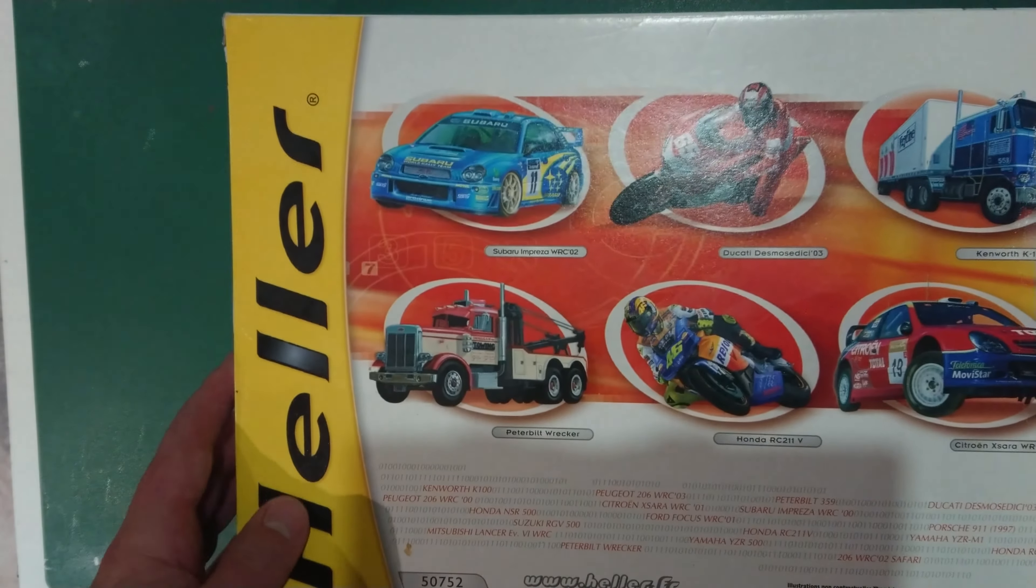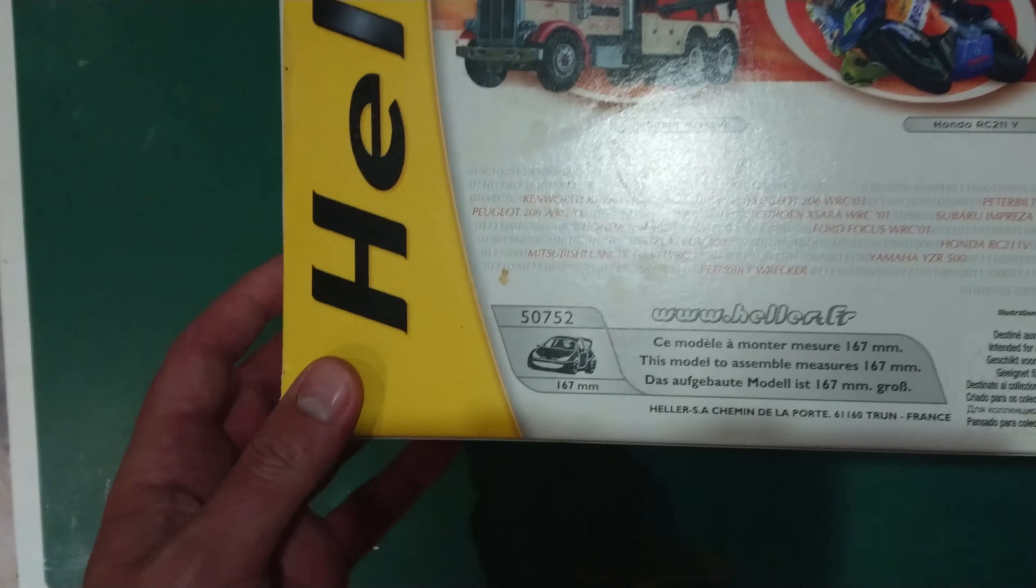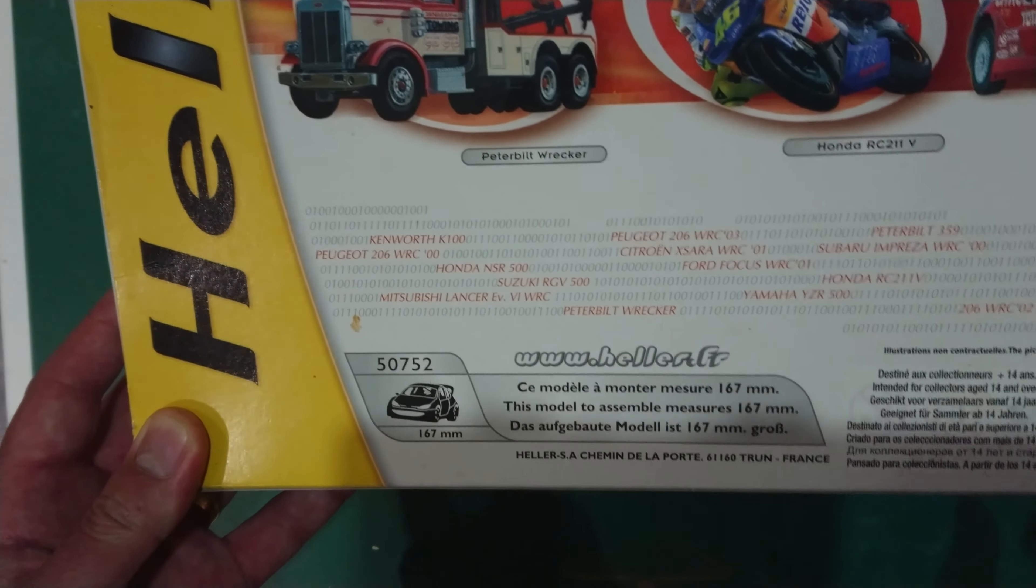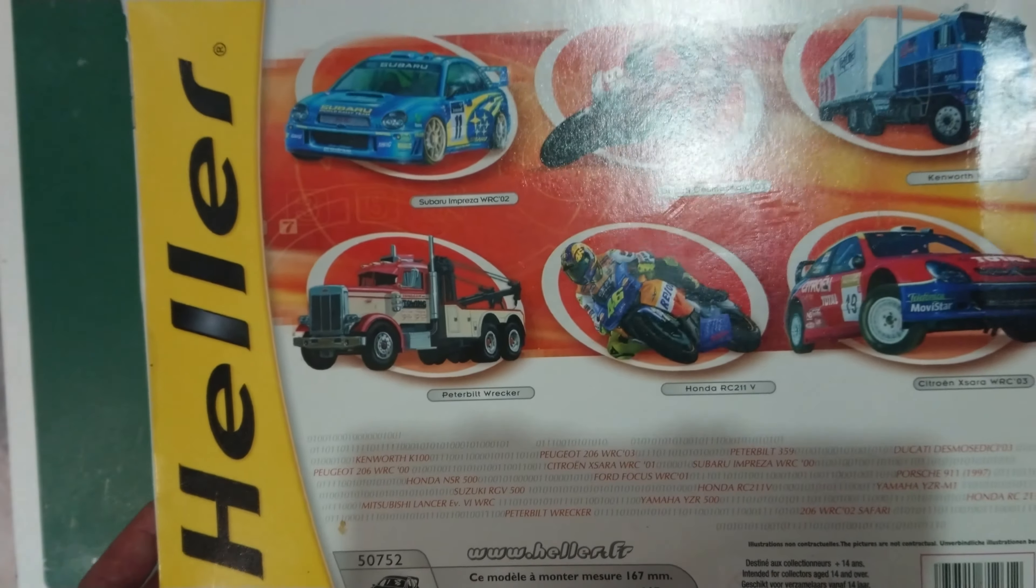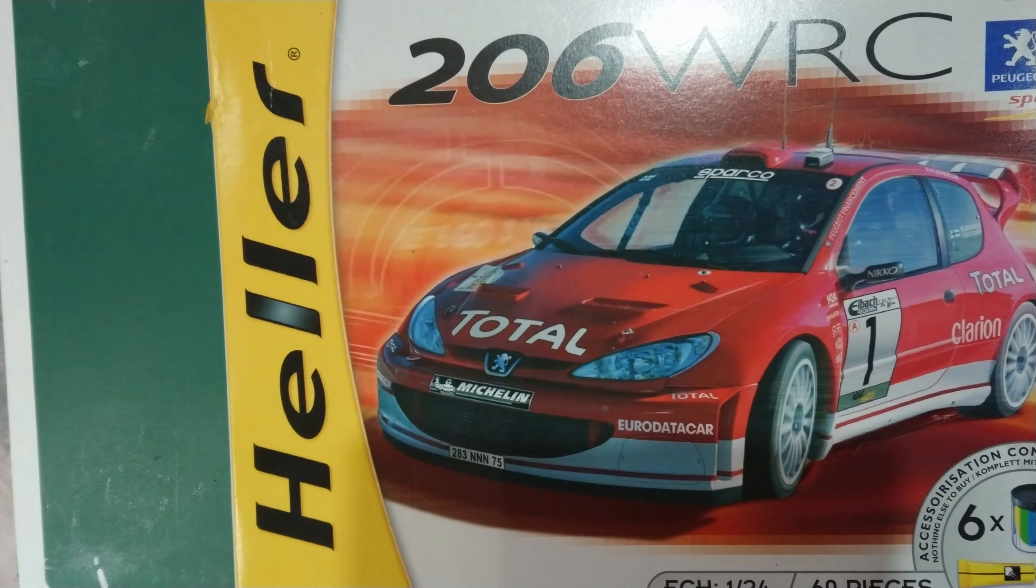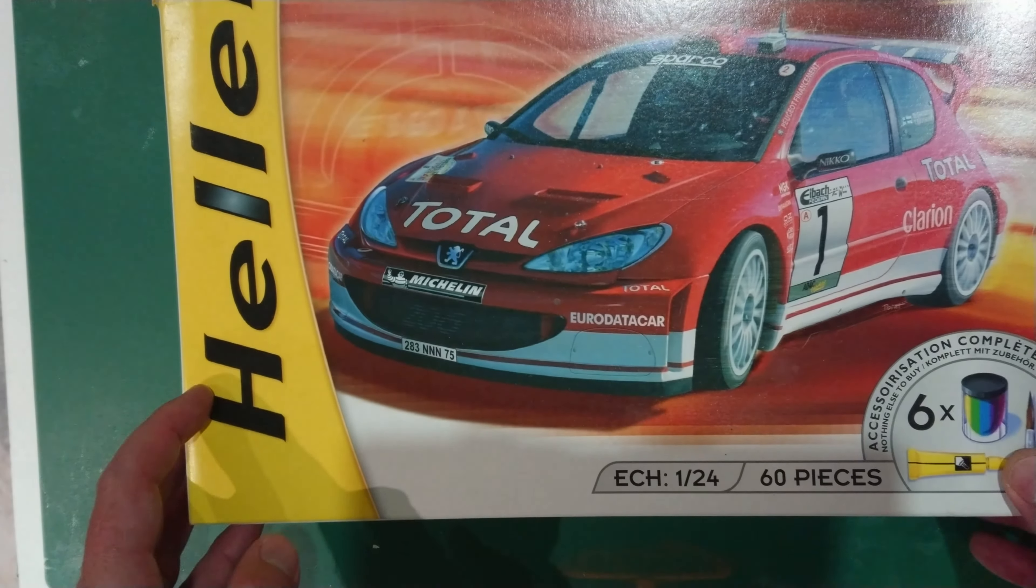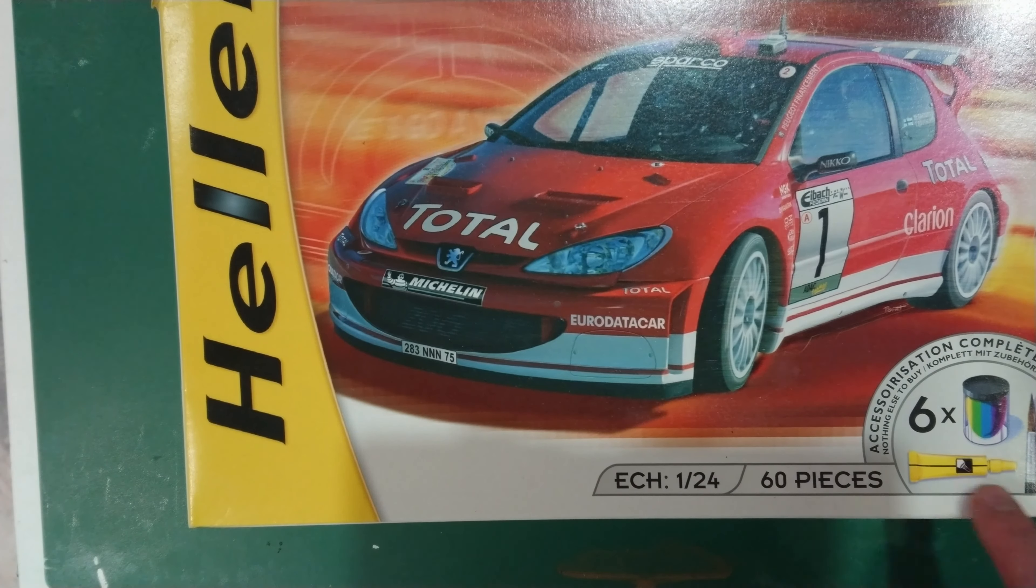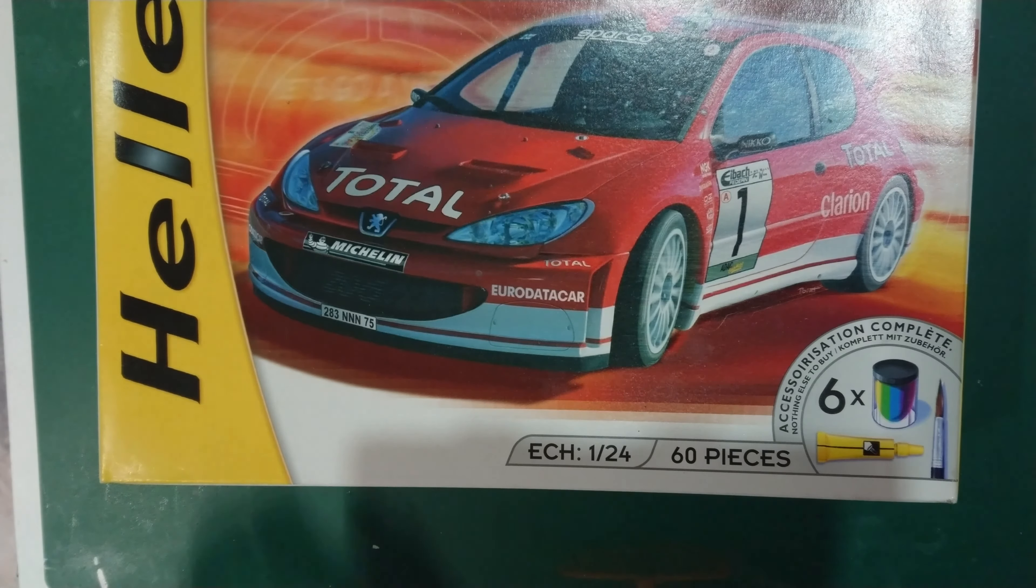You can see there on the back there's a few different adverts for different models that were out around the time. It also says that the model will assemble to the length of 167 millimeters and there's age warnings things like that. Also says the pictures are not contractual which I believe is their way of saying don't expect it to look quite the same as it does on the box which I'm not surprised about. This is obviously a photo, there are drivers on the inside there, this kit doesn't come with drivers. It's a 1 to 24 scale and 60 pieces and also as you can see here this set came with paints, glue and brush.